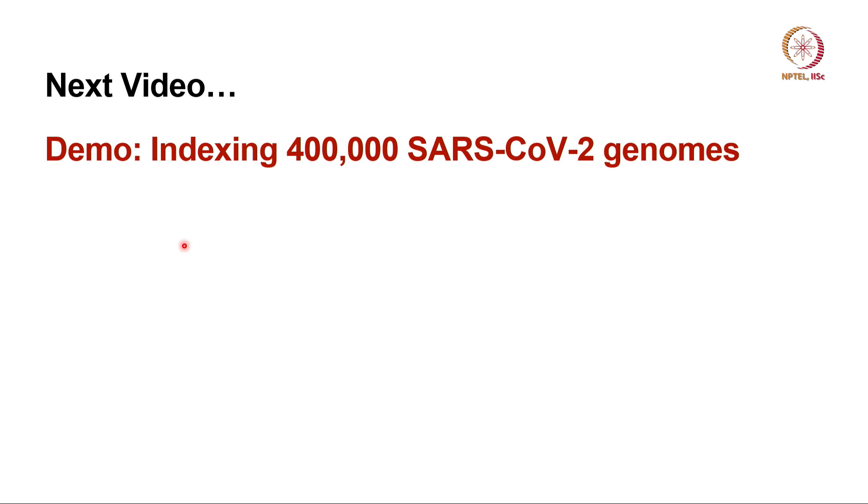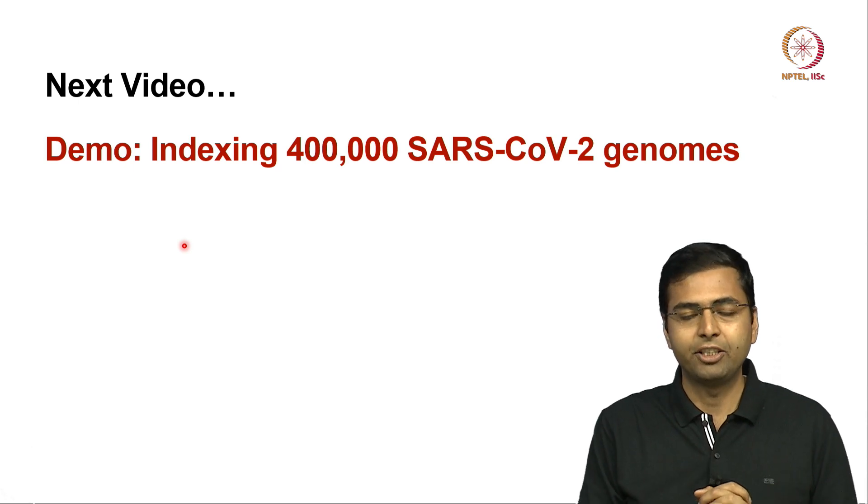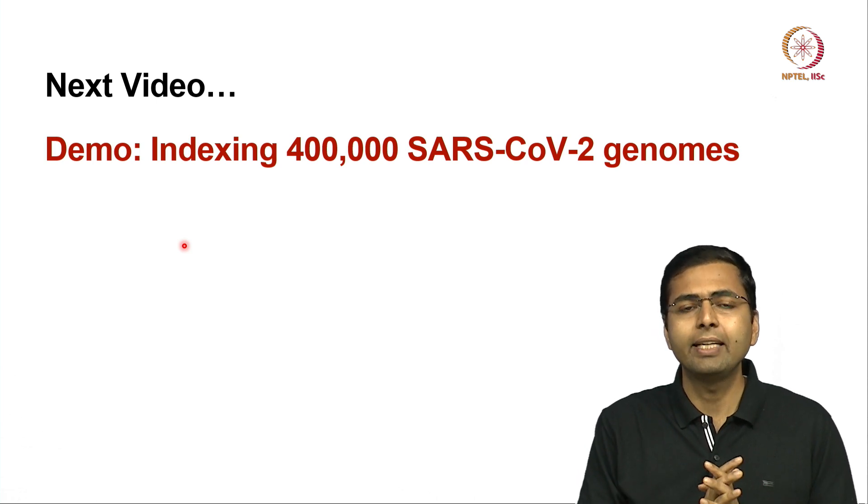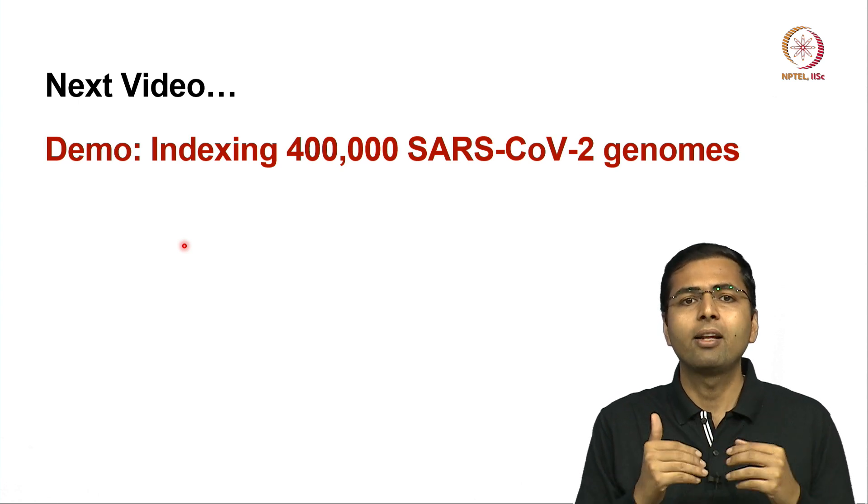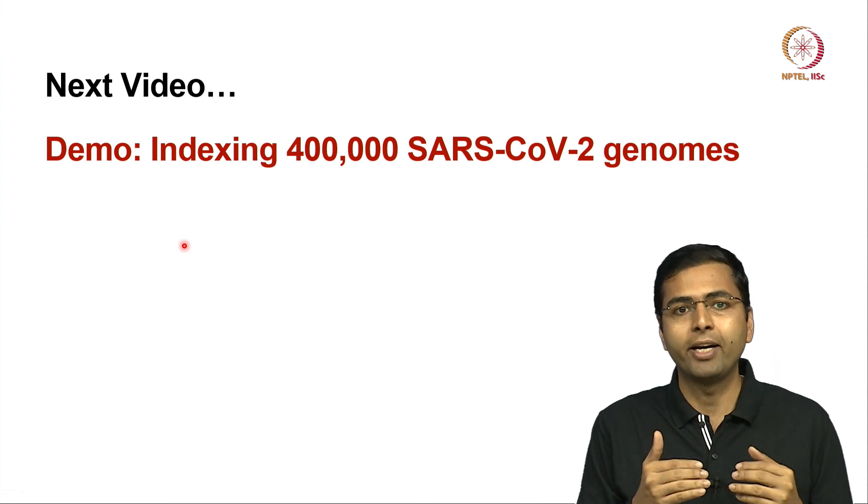That completes this class. In the next class, I will start with the introduction section. And before we go into the theoretical aspects, I want to show you a demo of indexing 400,000 SARS-CoV-2 genomes. This is just to show you what efficient algorithms are capable of and why they are so important.